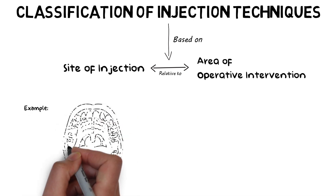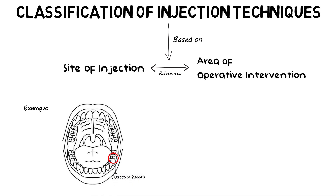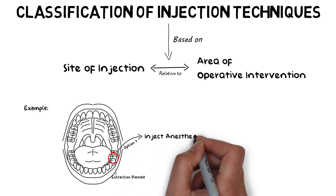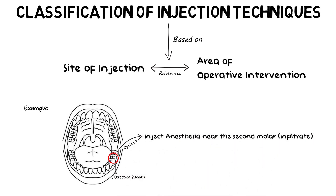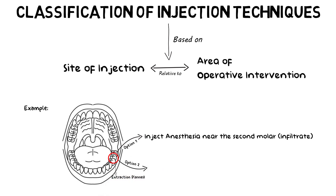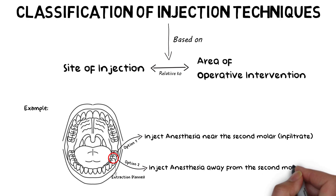For example, if I want to work on lower second molars, I can either inject the local anesthesia around that same tooth, or I can inject it somewhere else, as in the case of using the Gaugets technique, where the anesthetic solution is deposited away from the site I'm working on.